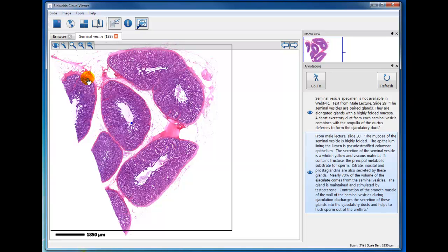Now this is just a portion of the seminal vesicle. What you see here are cross-sections of elongated tubes, and they're paired tubes that are very convoluted and packed together.